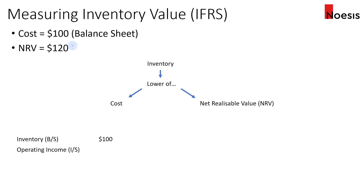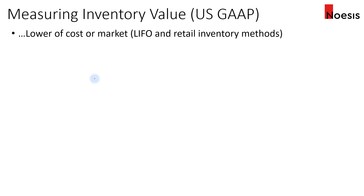In another example, if the cost on the balance sheet is $100 and the NRV is $120, we take the lower of the two, which is cost at $100 — the same as what's already recognized. Therefore, no adjustment is needed; inventory stays at $100 with no impact on the income statement.